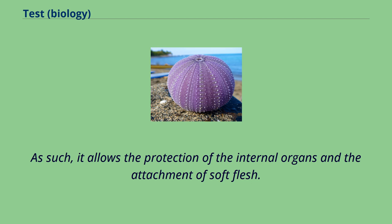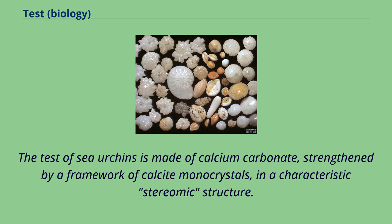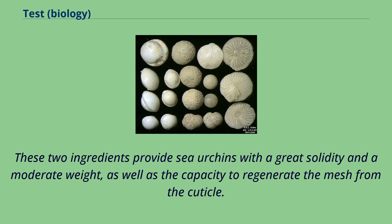Test of a sea urchin. The test of sea urchins is made of calcium carbonate, strengthened by a framework of calcite monocrystals in a characteristic stereomic structure. These two ingredients provide sea urchins with great solidity and moderate weight, as well as the capacity to regenerate the mesh from the cuticle.